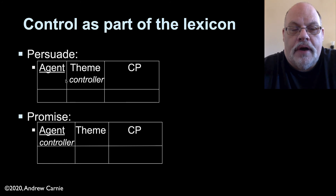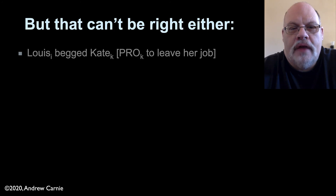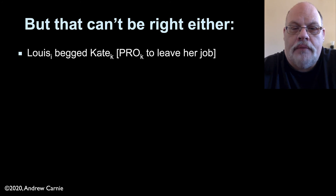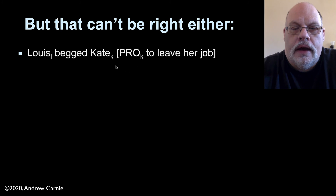One proposal is that the controller is specified in the theta grid. The lexicon contains the information that the controller in 'persuade' constructions is the object, but the controller in 'promise' constructions is the subject. So theta grids would specify that with 'persuade' the theme was the controller, and with 'promise' the agent was the controller. That seems to work for those two verbs, but it doesn't work for every verb. There are verbs like 'beg,' which is a really confusing predicate. In 'Louise begged Kate to leave her job,' Kate is the subject of the embedded clause, making it look like 'persuade.'